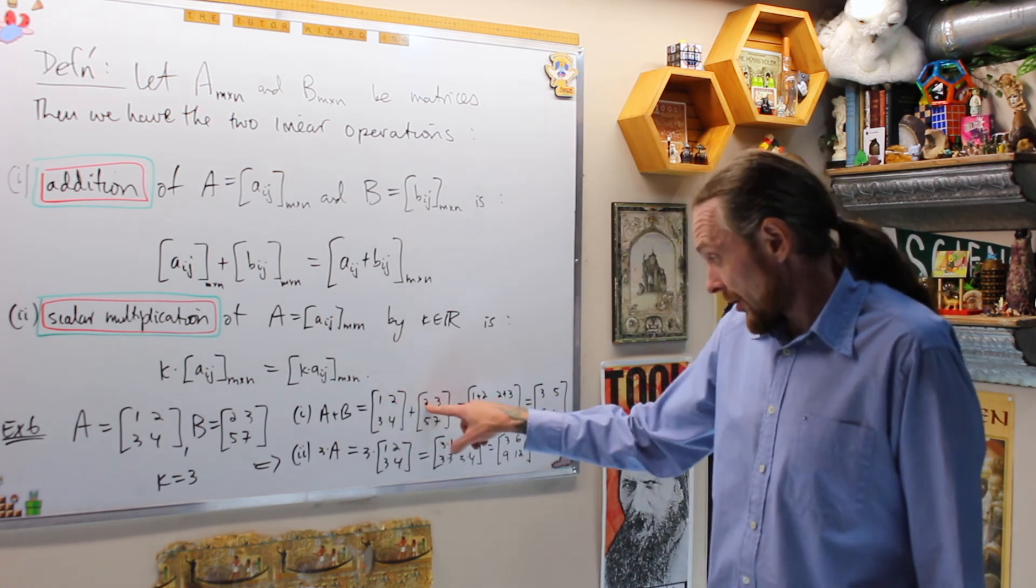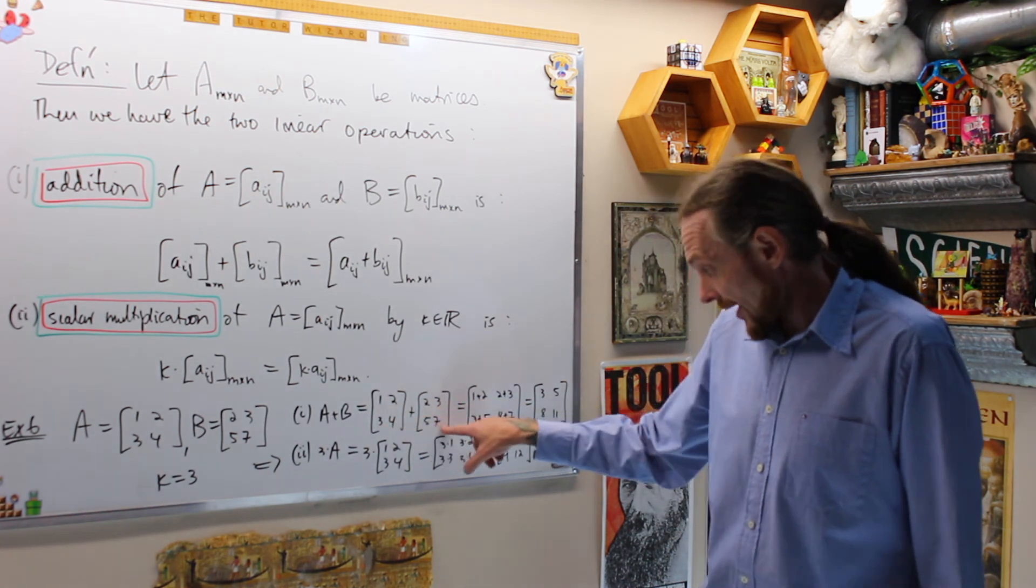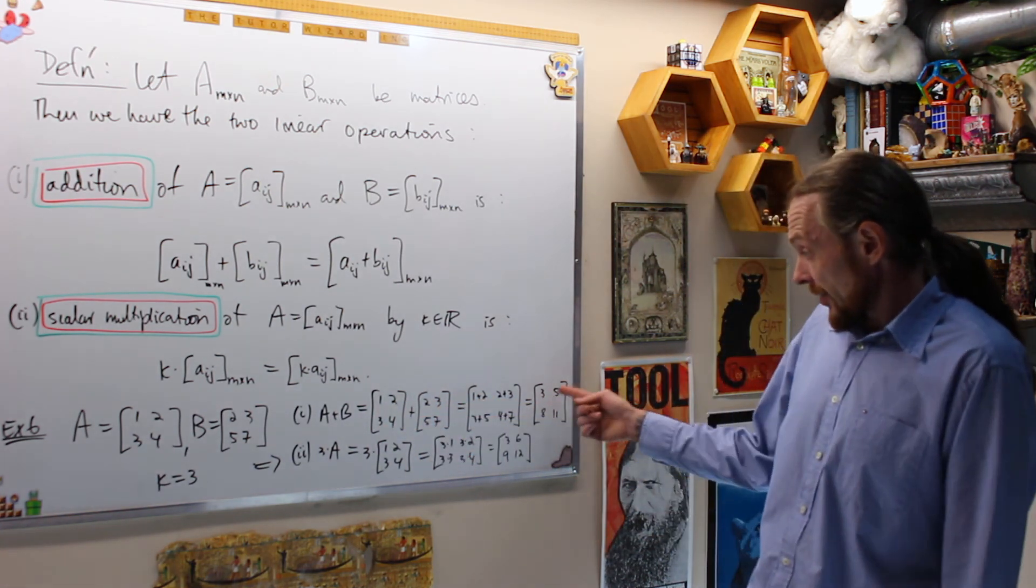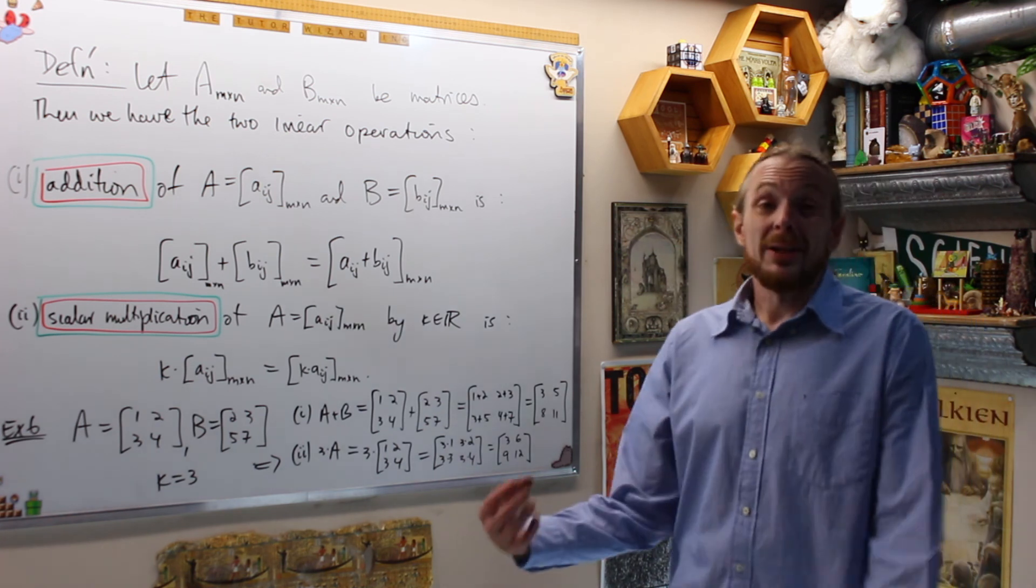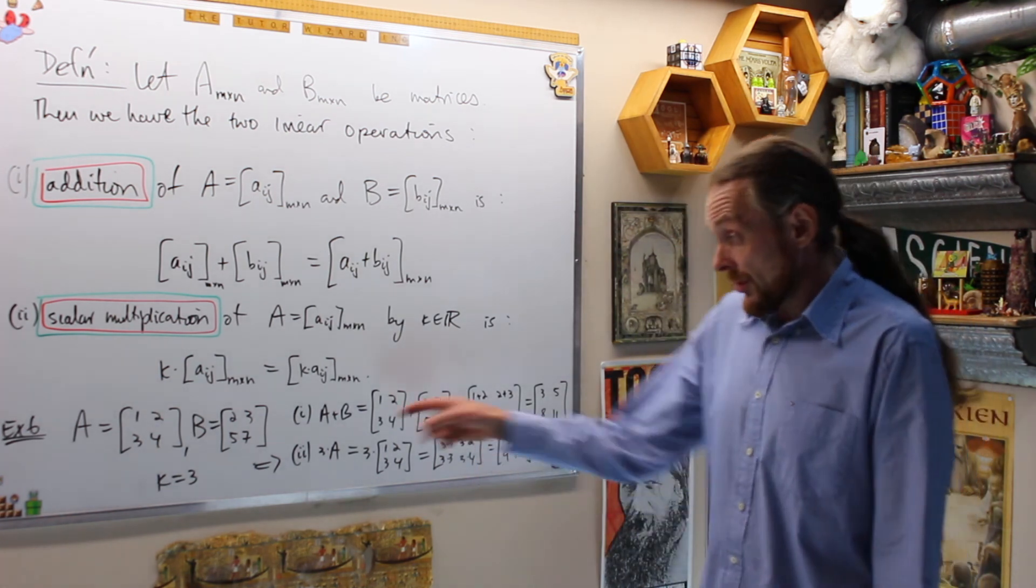1 plus 2, 2 plus 3, 3 plus 5, 4 plus 7, and we get the matrix [3, 5, 8, 11]. Notice we're creating a new matrix of the same size from two given matrices.